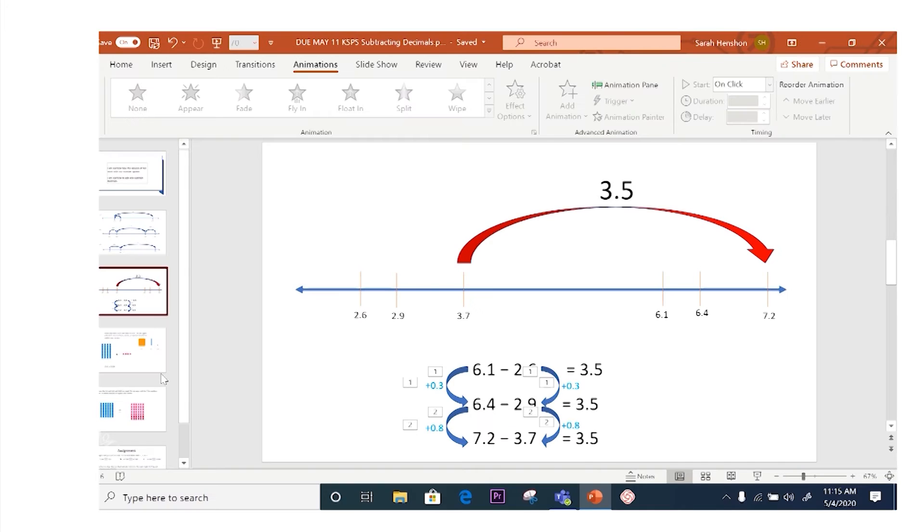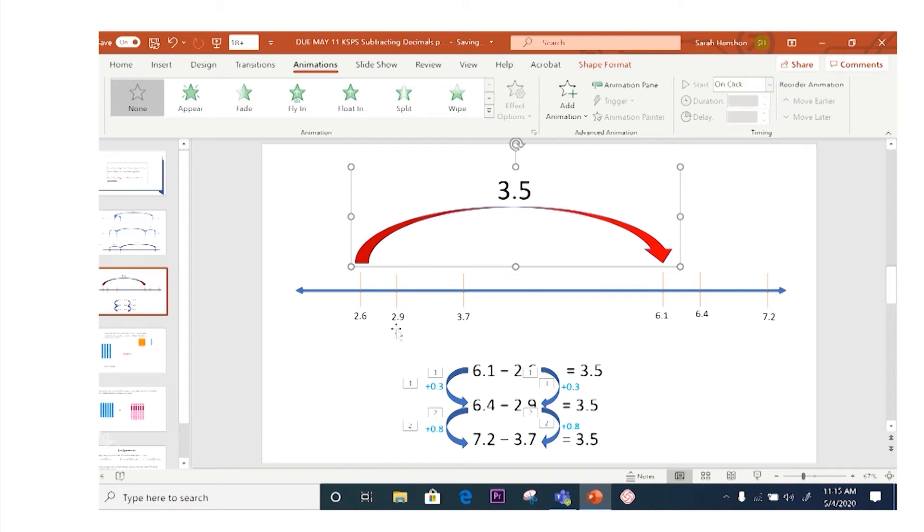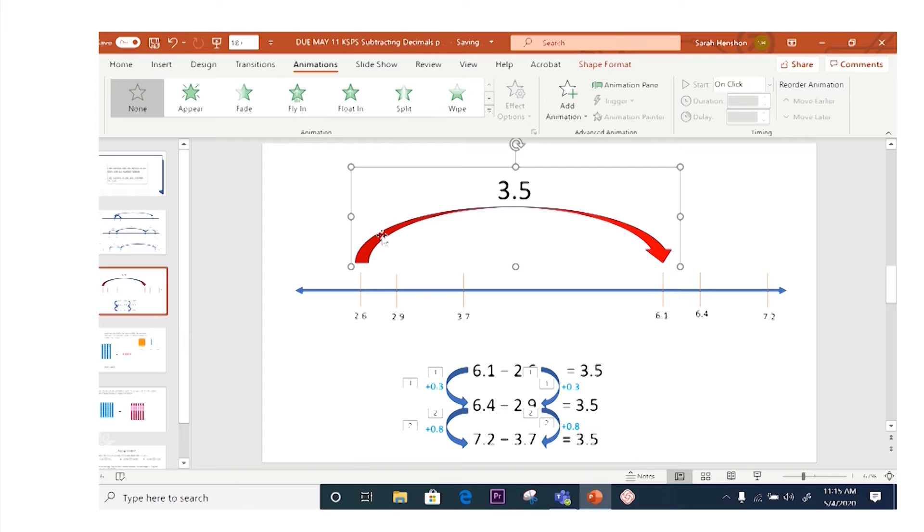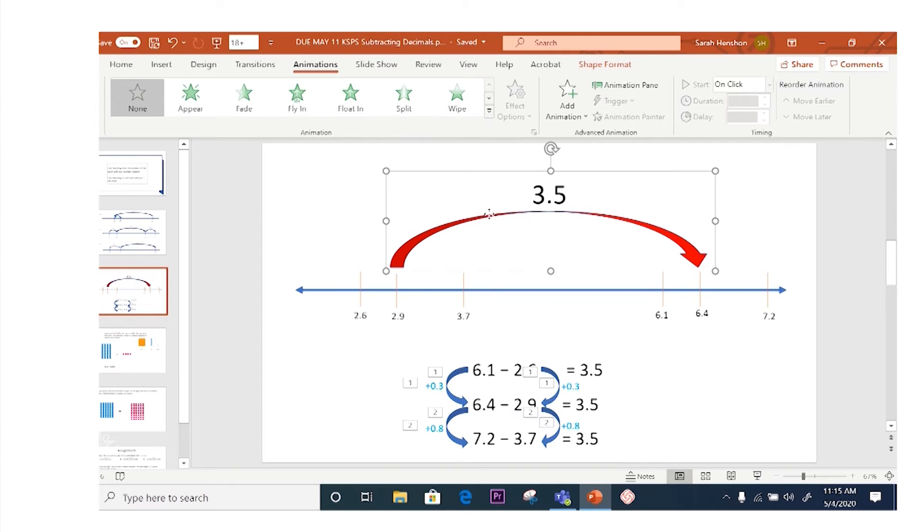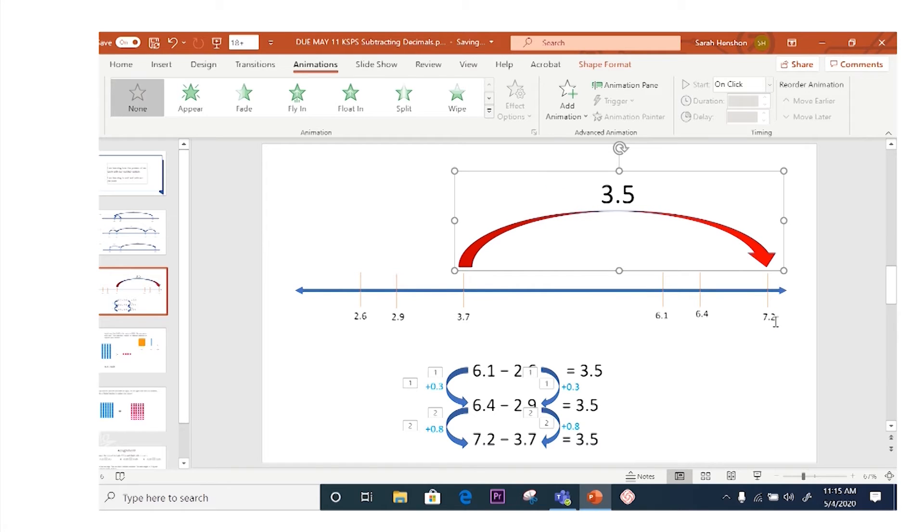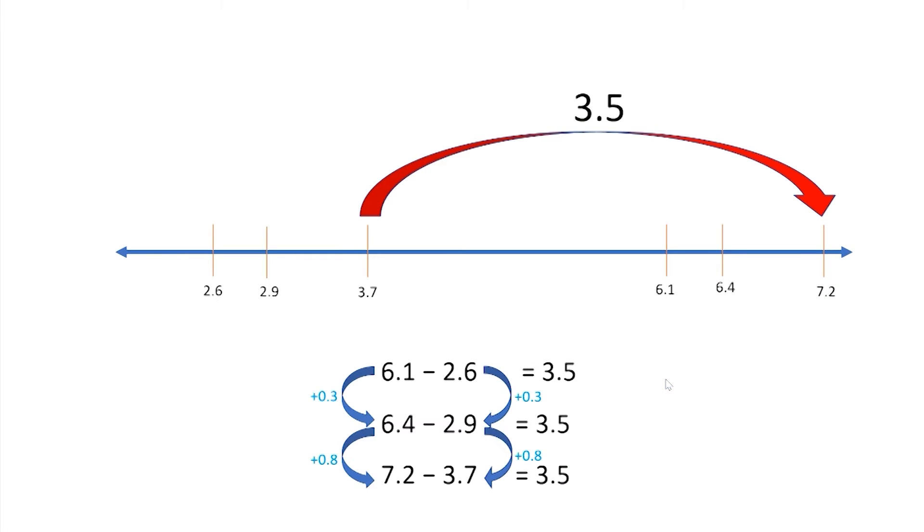Now, I'm going to show you something here really quick. Watch this. We started at 6 and 1 tenth, take away 2 and 6 tenths, and the difference between was 3 and 5 tenths. And then we did the 6 and 4 tenths, take away 2 and 9 tenths, and the difference was 3 and 5 tenths. And then we did 7 and 2 tenths, take away 3 and 7 tenths, and the difference was 3 and 5 tenths. Isn't that pretty cool? Again, it's called the constant difference strategy.